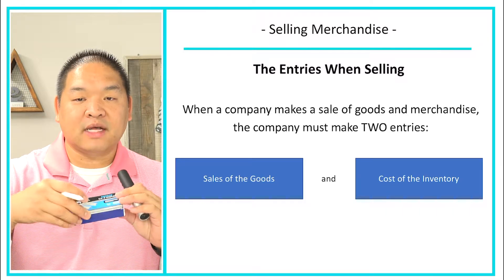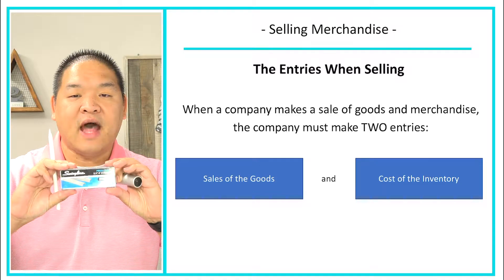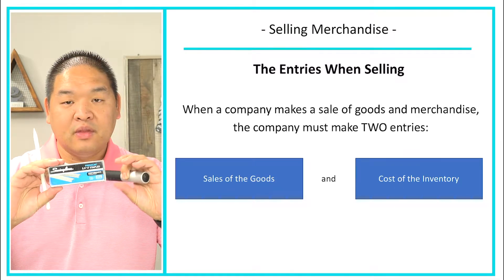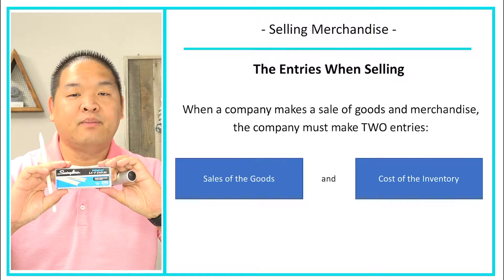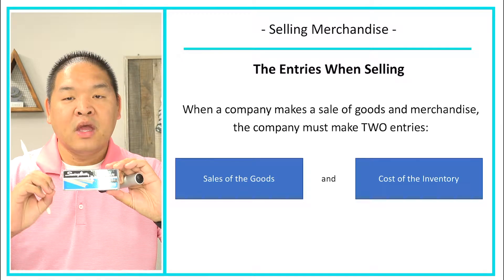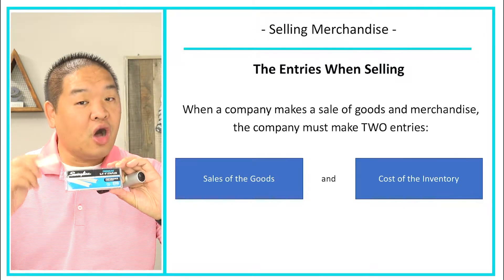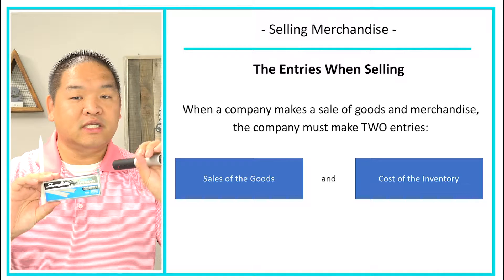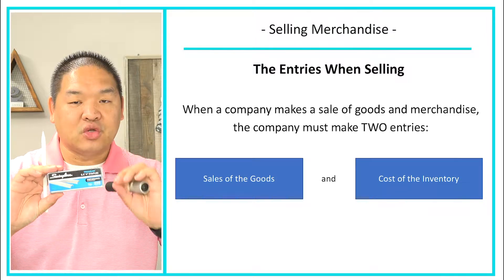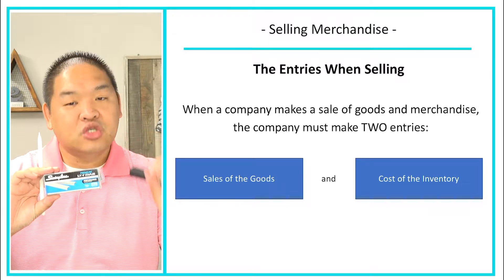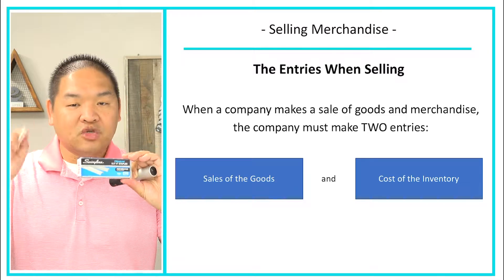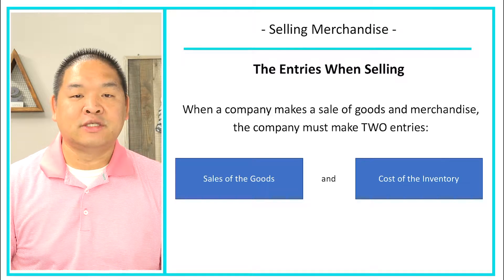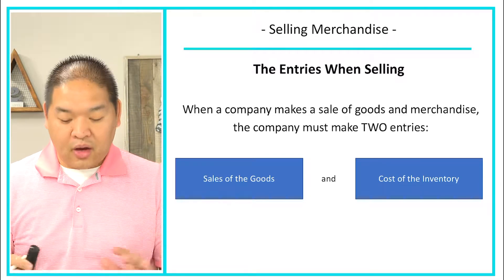Using our example of this box of staples, we said that the cost to us was $1 and we sell it for $2. So we're going to need to report the cost of what we sold at $1, and we're also going to need to report the sale — how much we sold it to our customers — in this case $2. We rebook the sale of the goods for $2 and the cost of the goods at $1 on our books.